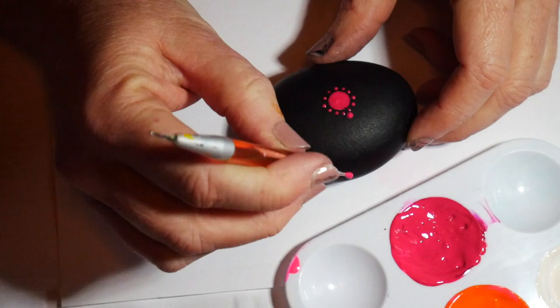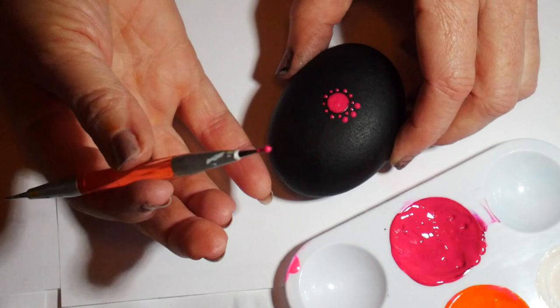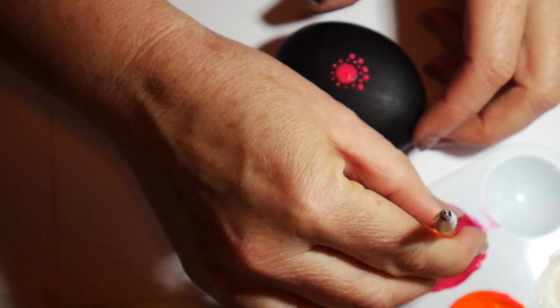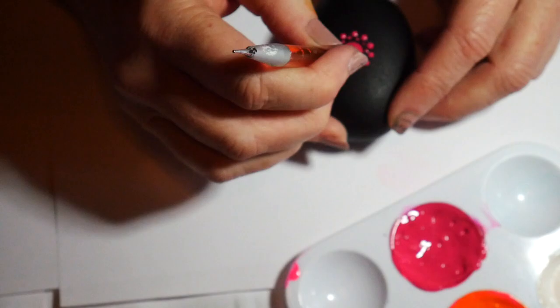Now I'm going to start the next row in the same fuchsia, using a slightly larger dot, just offsetting. You can see how that dot is snug right in there but not touching any of the other dots - just as close as you can get without actually touching. I'm going to go all the way around the clock face with that fuchsia until I have the next row.